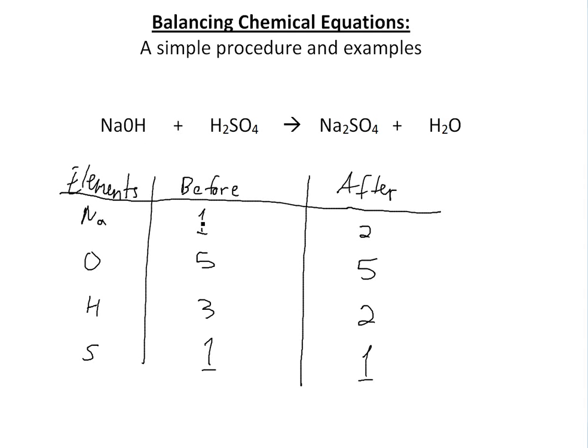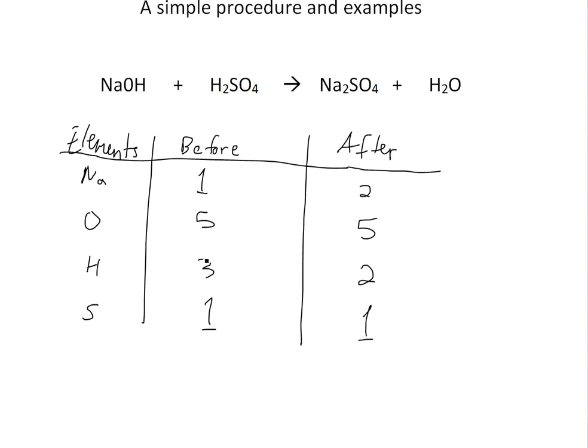So we see that Na there's one before and two after. So that doesn't work. O is fine. S is fine. H is a bit off. So the next step is actually look at the hardest one. Look at the most hard or uneven before after elements. This one's pretty easy to change. All we do is put a two over here.